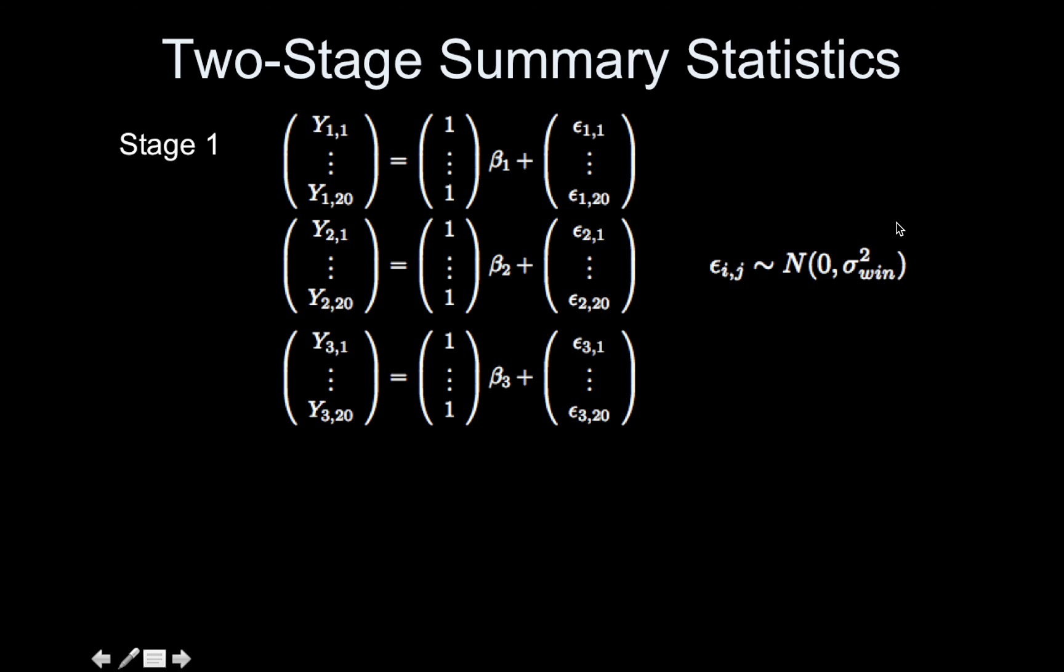I'm still assuming this within-subject variance is the same, but clearly when you have the model separate this way, it'd be easy to estimate this separately for each person. But for now we're going to assume it's the same. That's what stage one now looks like.